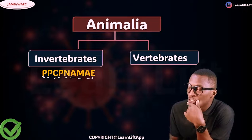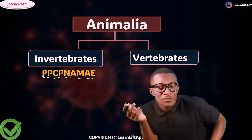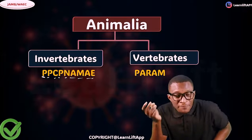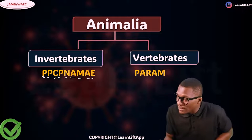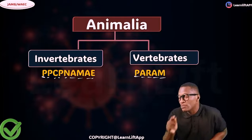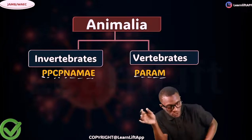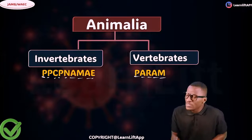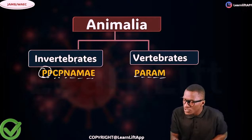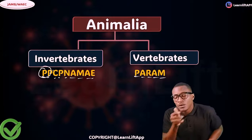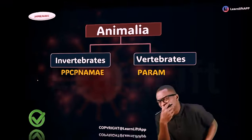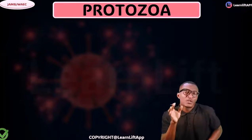Under invertebrate we also have Arthropoda and Echinodermata. Under vertebrate we have the Pisces, the Amphibians, the Reptiles, the Aves, and the Mammals. Now we are tracing this first phylum, which is the Protozoa.